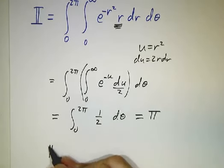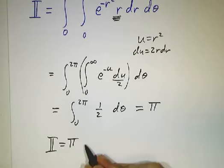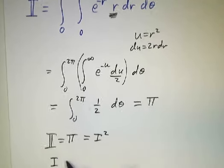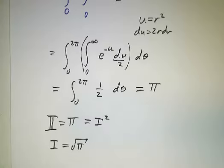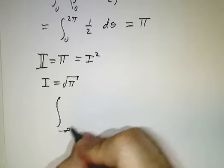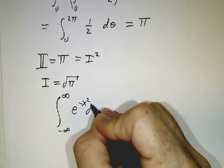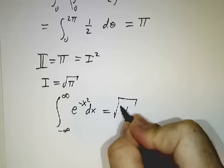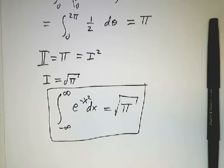So since our two-dimensional integral was π, and our two-dimensional integral was the one-dimensional integral squared, the one-dimensional integral must have been √π. So the integral from -∞ to ∞ of e^(-x²)dx is √π. All because of the magic of polar coordinates.